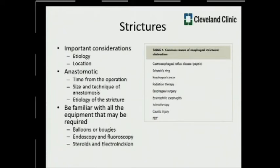For anastomotic strictures, it's important to understand the type of anastomosis created. In a bariatric procedure, many anastomoses are purposely created small, and it's important to recognize the technique — circular, linear, or hand-sewn. It's also important to realize the time from the initial operation to the timing of the stricture, as that will dictate how aggressive you'll be in management. Understanding all the different tools available — balloons, bougies, fluoroscopy, steroids, and cautery techniques — is essential.